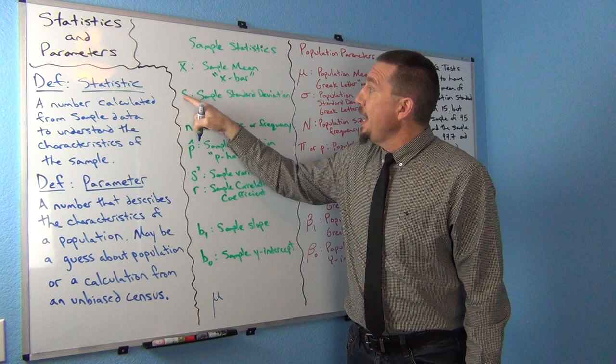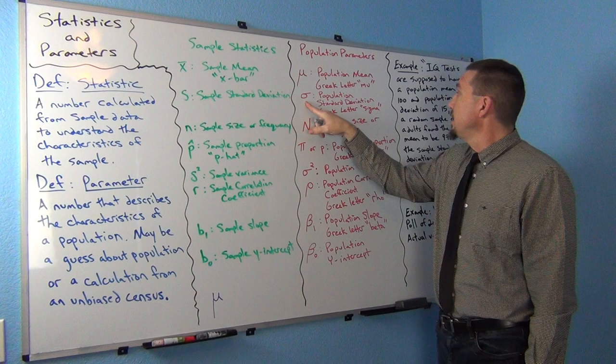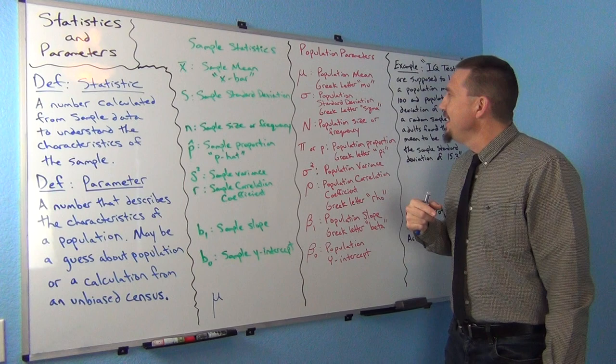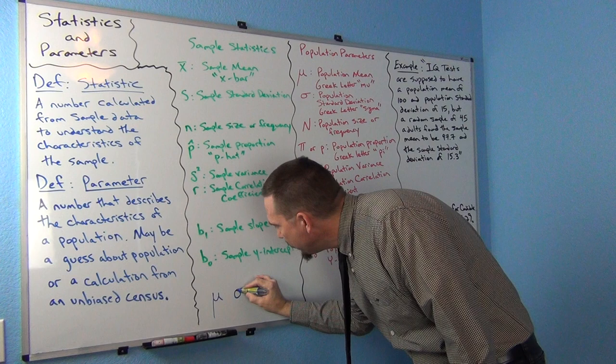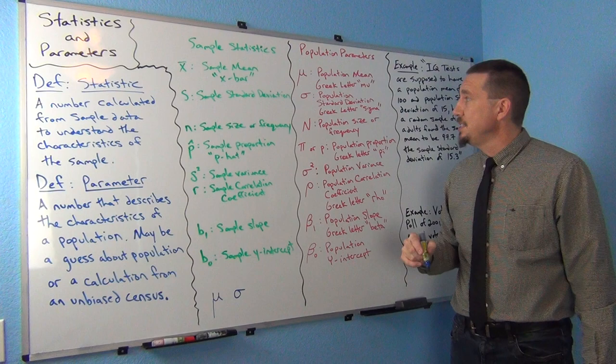The sample standard deviation is s — if you see s by itself, that's the sample standard deviation. But for the standard deviation of everybody in a population, we use the Greek letter sigma — lowercase sigma. To draw it, draw an o and then put a horizontal bar going to the right on top of the o. When you see that symbol in statistics, it means a population standard deviation.